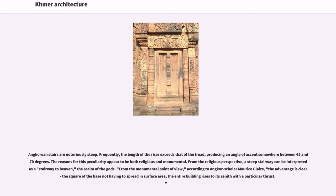Angkorian stairs are notoriously steep. Frequently, the length of the riser exceeds that of the tread, producing an angle of ascent somewhere between 45 and 70 degrees. The reasons appear to be both religious and monumental. From the religious perspective, a steep stairway can be interpreted as a stairway to heaven, the realm of the gods. From the monumental point of view, according to Angkor scholar Maurice Glaize, the advantage is clear: the base not having to spread in surface area, the entire building rises to its zenith with particular thrust.